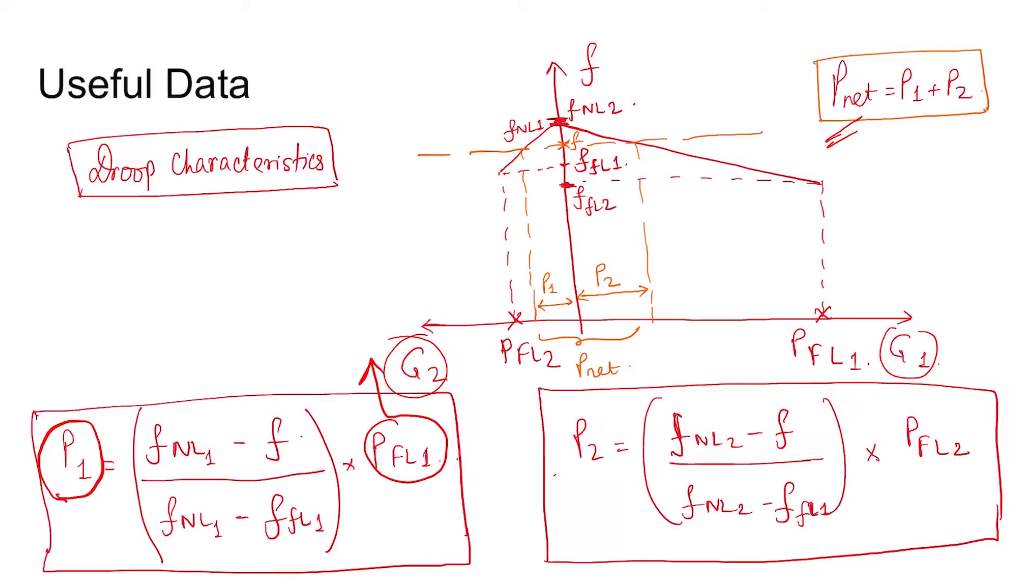As the full load capacity increases, the power sharing capacity also increases. And as droop reduction, that is f_NL1 minus f_FL1, this term becomes smaller, also this term increases, the capacity of generator one. If the capacity is more, it will share more load.